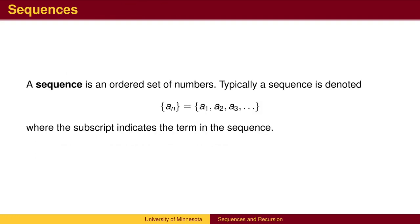A sequence is an ordered set of numbers. There is a first element of the sequence, followed by a second, third, and so on. The nth term of the sequence is denoted a sub n.